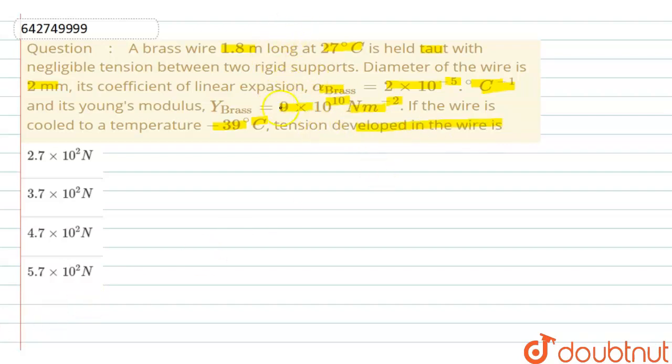According to the question, the length of the brass wire is 1.8 meter. Initial temperature is 27 degree Celsius.